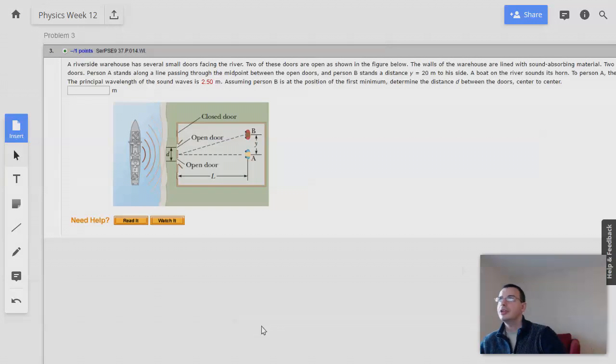Week 12, problem 3. A riverside warehouse has several small doors facing the river. Two of these doors are open as shown in the figure below.